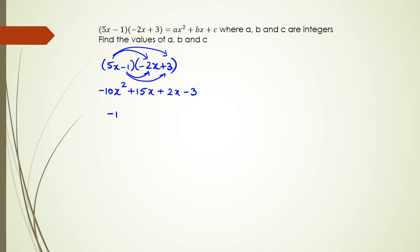Combining the like terms, we're going to get negative 10x squared plus 17x minus 3. And of course, this is equal to ax squared plus bx plus c. So from here, we can say that a equals minus 10, b equals 17, and c equals minus 3.